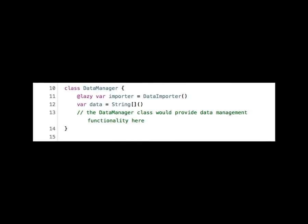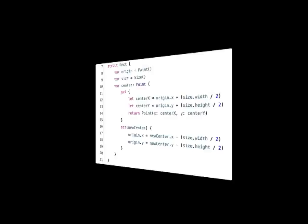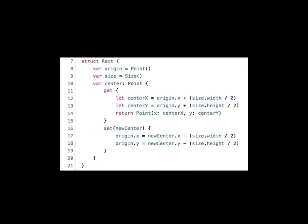Lazy loaders are even easier — you just declare the variable as `lazy` with the `@lazy` prefix and it won't load itself unless it's needed. If it never gets used, it stays nil and is not instantiated. If you want to write getters and setters, you just open up your variable with curly braces and write any code you wish, marking `get` and `set`.